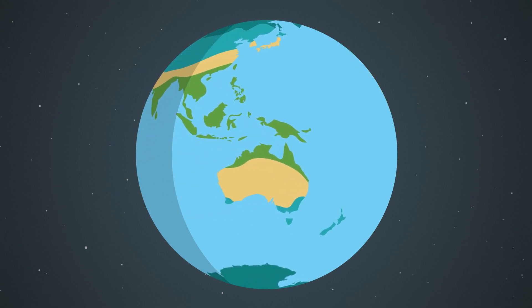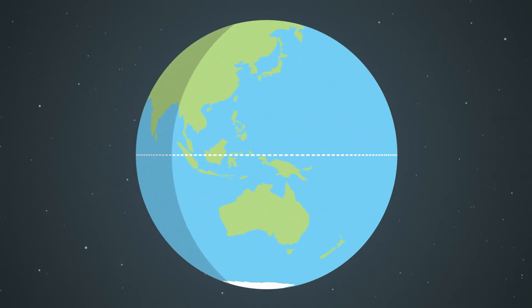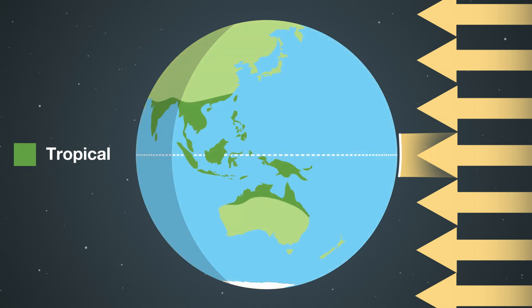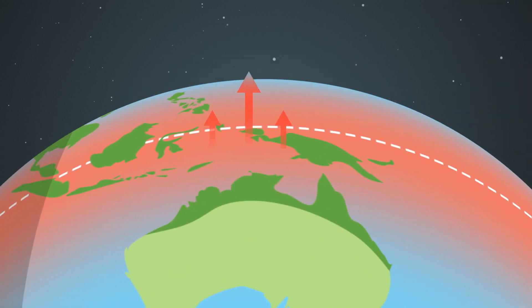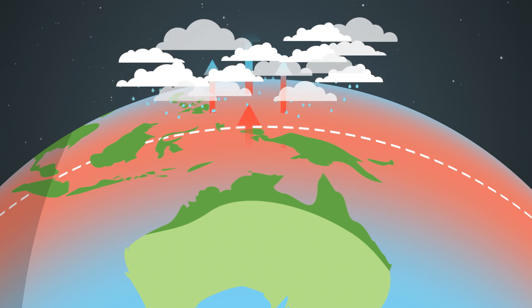The location of these climate zones is largely determined by the Sun. Areas around the equator get direct sunlight all year round, meaning that at noon the Sun is right overhead. This is called the tropical zone. When the sunlight hits the surface of the earth or the ocean it warms the air above it, causing it to rise.